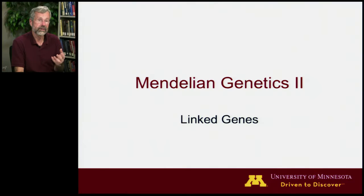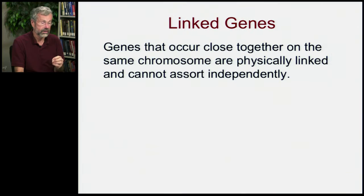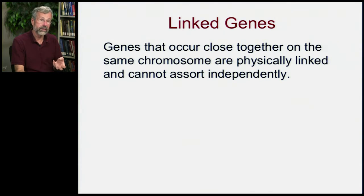In all of these examples, we've seen where these different traits are unlinked — they are able to pass on independently in the gametes. But we now need to turn to a phenomenon called linkage. Linked genes are genes that occur close together on the same chromosome and they're physically linked so that they cannot assort independently.